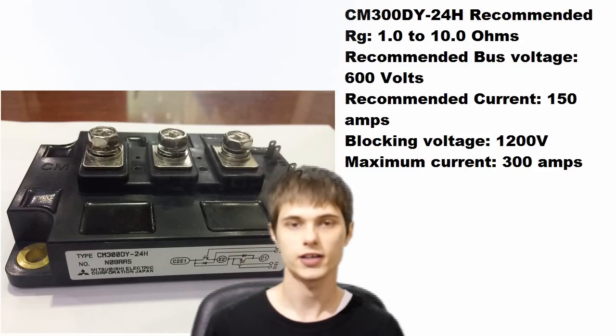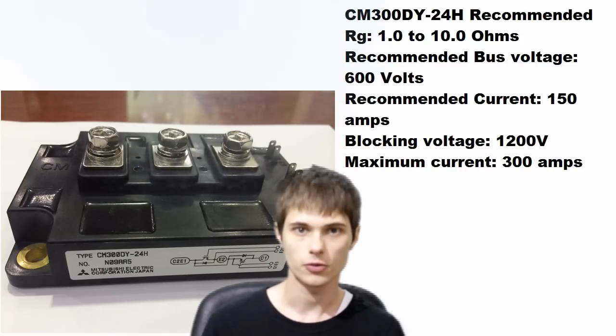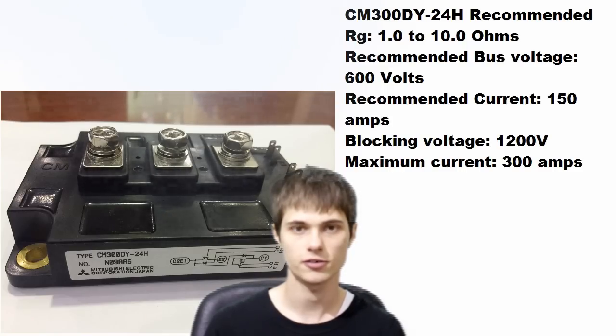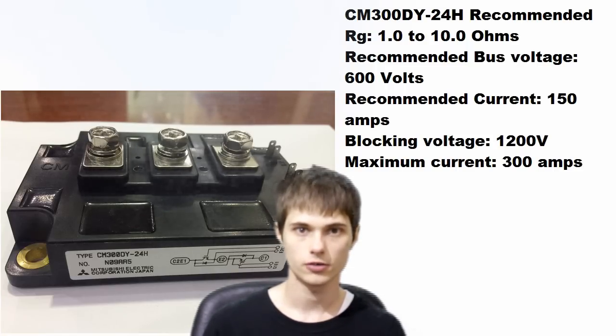Okay, so how do you actually determine what gate resistor you need for your power electronics device? There are a few things to consider. The first thing to consider is what the manufacturer recommends. They made it and they know how it works for the most part. Most manufacturers provide a range of gate resistors that are appropriate for the device that you want to use. For example, the device that we will be testing today has a range suggested by the manufacturer that goes from 1 ohm up to 10 ohms. So good advice would be to stay within that range.